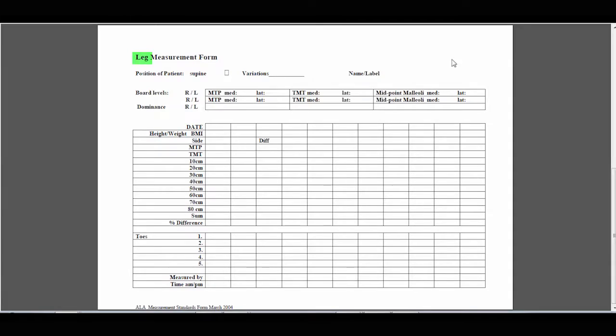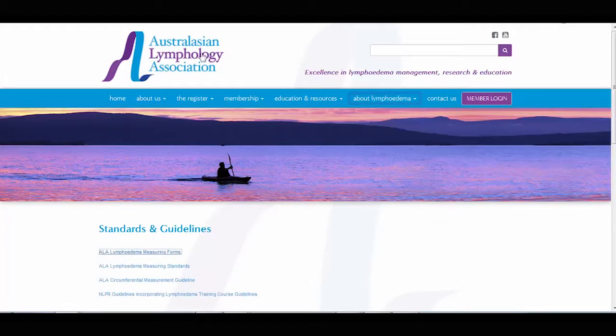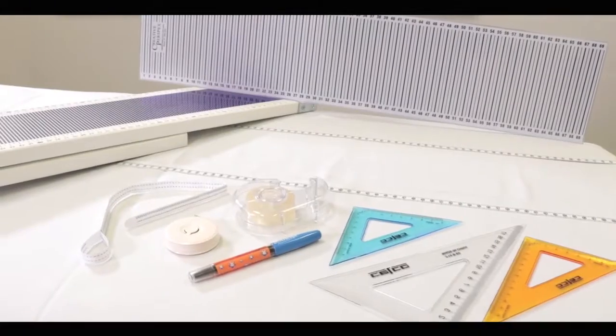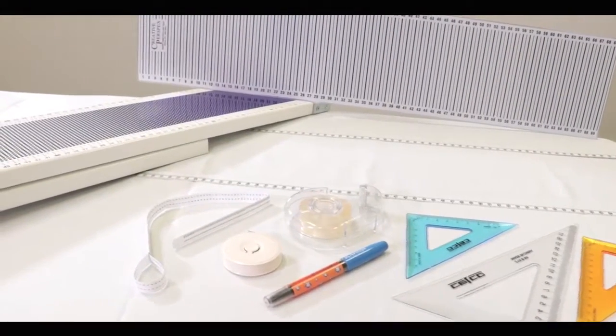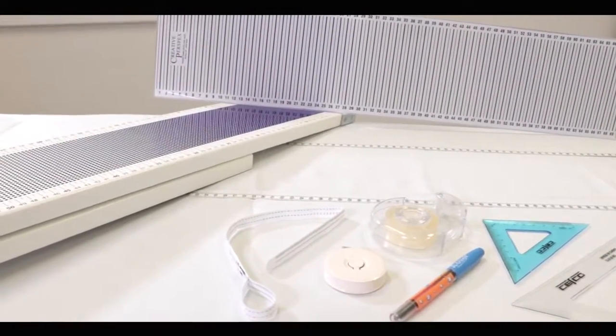The measuring standards outline a consistent way to measure a patient's arm from one visit to the next. To ensure accurate and reproducible marking of the arm, the use of a limb measuring board is recommended.